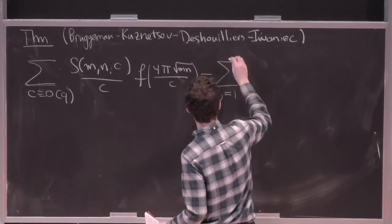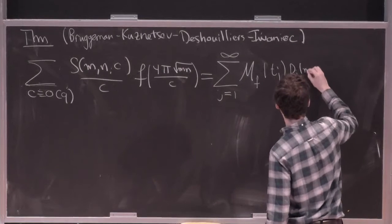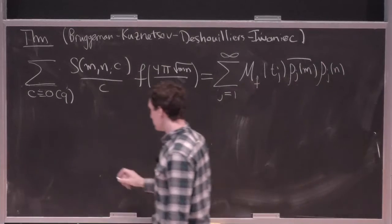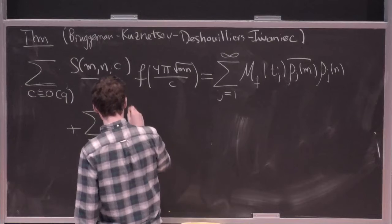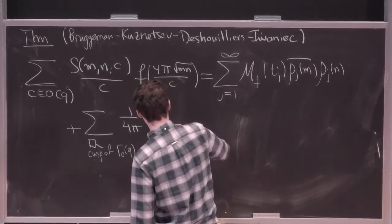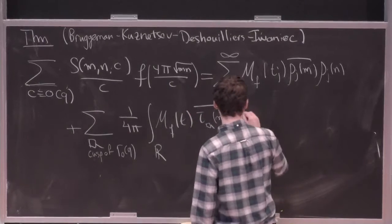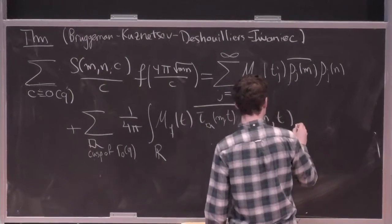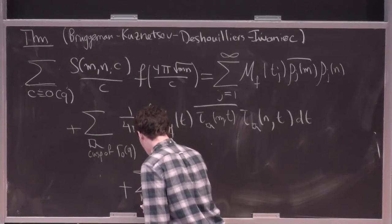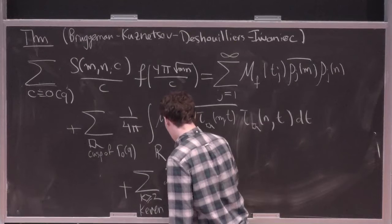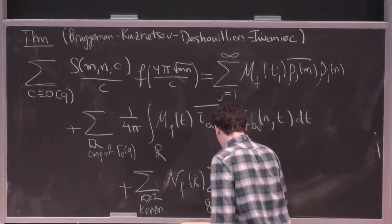So here's a sum over Maass forms, M_f(t_j) ρ_j(m) ρ_j(n), plus sum over the cusps of Γ₀(q), and then integral over the continuous part, and the holomorphic part. So here is k at least 2 and even weights. And then this is the N transform, N_f(k), and then I have a sum over the g in my orthonormal basis.